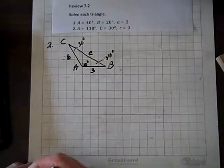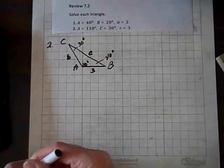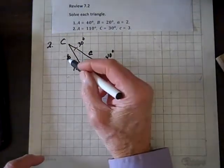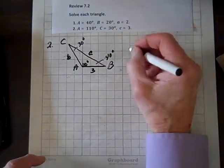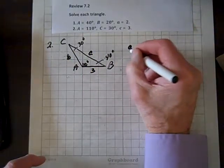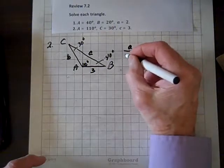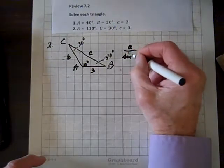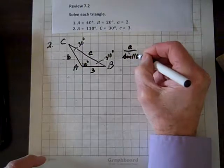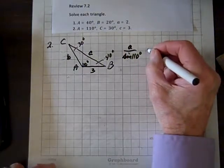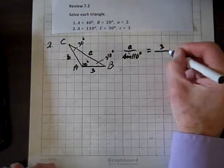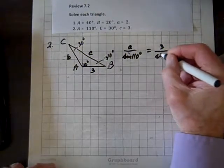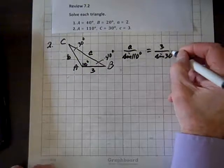Now let's use the Law of Sines to find the length A and the length B. A over sine of 110 degrees equals 3 over sine of 30 degrees.